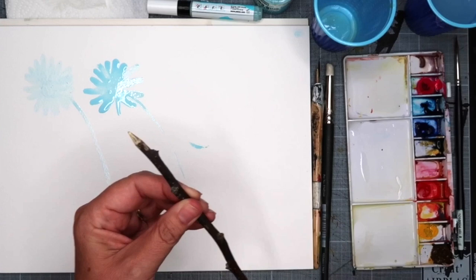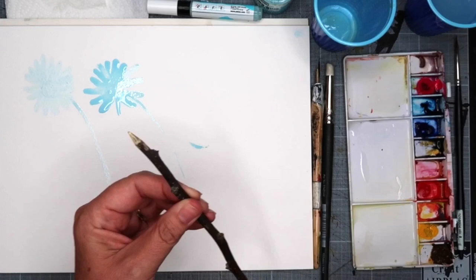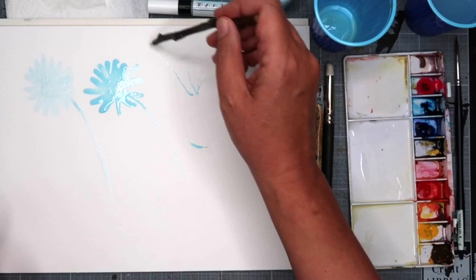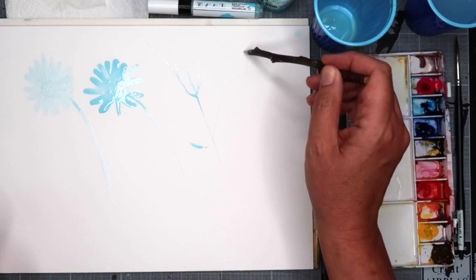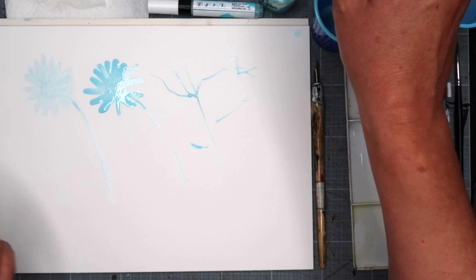I also use my twig. This is an ordinary twig from the garden. I've sharpened it with a pencil sharpener, and now I'm going to dip it into the masking fluid. What you get here is some very beautiful thin lines, so it's ideal for masking fluid. You just wipe it clean afterwards like that.